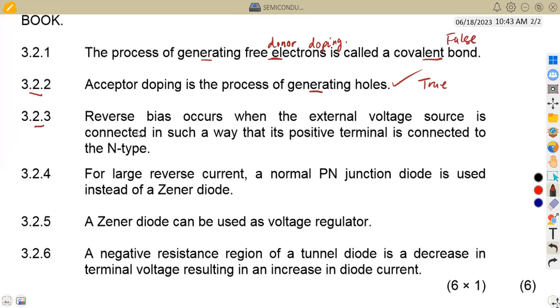3.2.3, reverse bias occurs when the external voltage source is connected in such a way that a positive terminal is connected to the N type. So this is actually true. Positive is connected to the N type, the negative to the P type, that is a reverse bias. If it is positive to the P type, that is a forward bias. So this is actually very true.